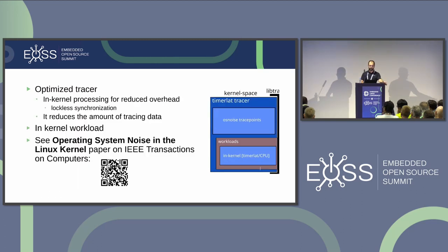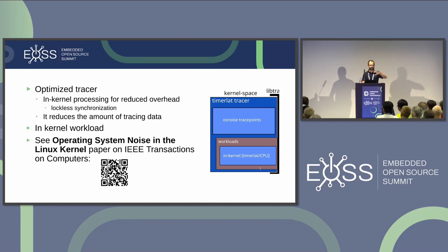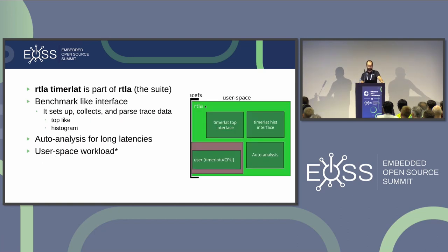On the kernel side, we have the TimerLat tracer, which does in-kernel processing for the timer and adds a set of OS noise trace points. It does most of the processing in-kernel to reduce tracing overhead and writes only processed information to the trace buffer. It uses lockless synchronization to avoid false positives. It also has an in-kernel workload that simulates black-box tooling. There is a paper in IEEE Transactions on Computers about the sibling OS noise tracer, which uses the same trace points and the same ideas.